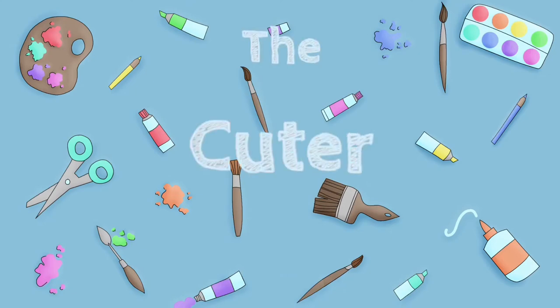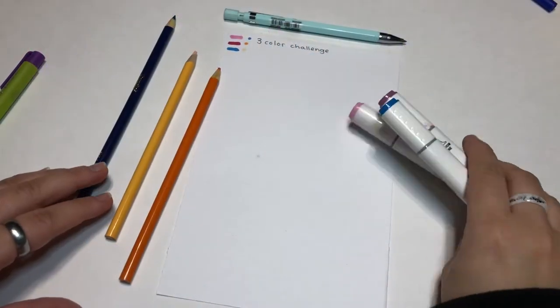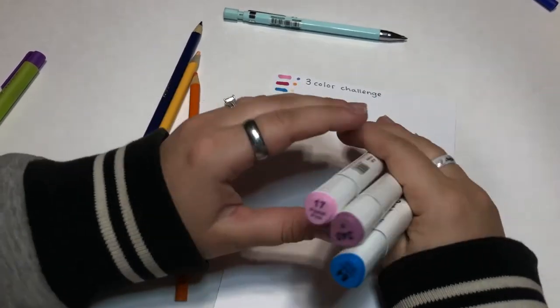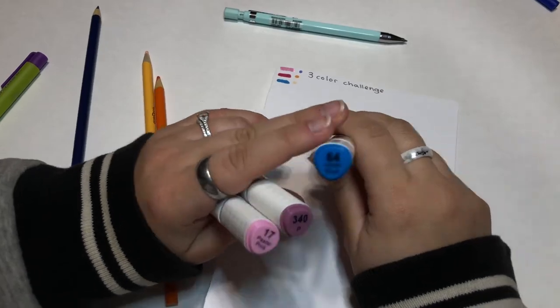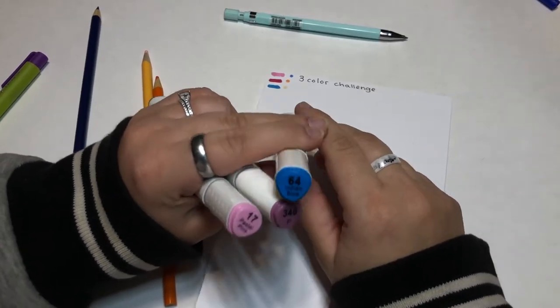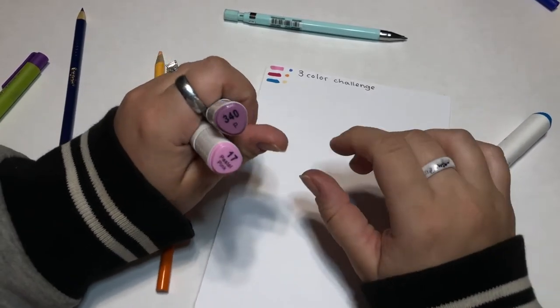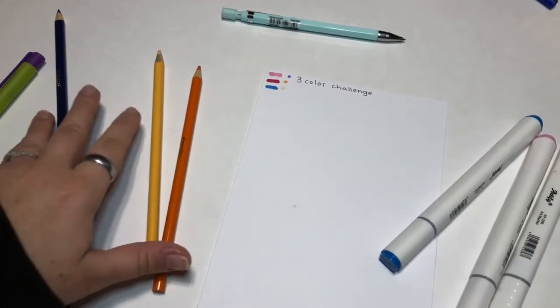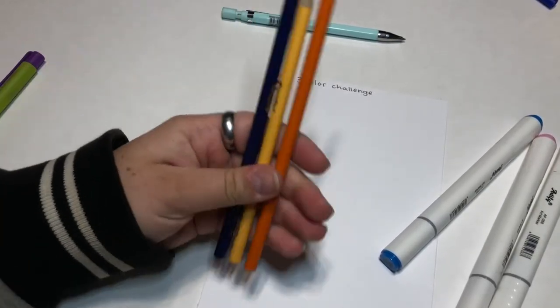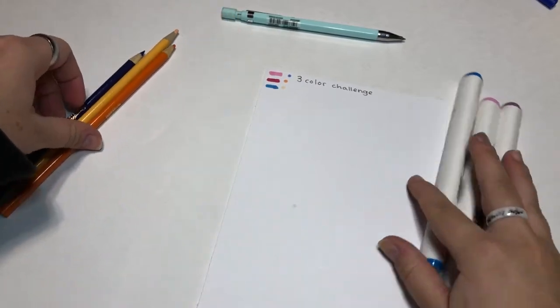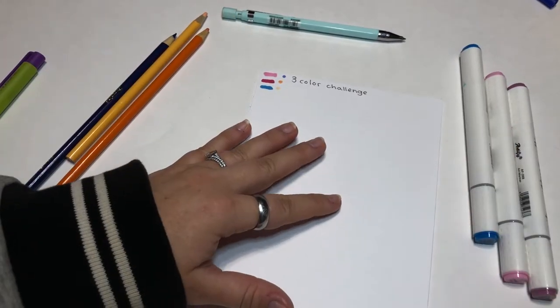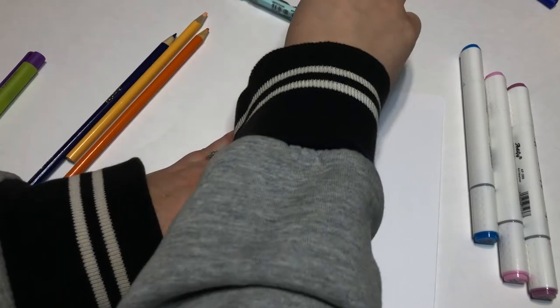Welcome cuties, let's create! Today I'm going to be doing a marker challenge or I guess a color challenge. I pre-picked these out: I have Indian blue, I have one that's named P, and then pastel pink. I also picked out three colored pencils - orange, peach, and blue. I picked these out by closing my eyes and randomly picking them out.